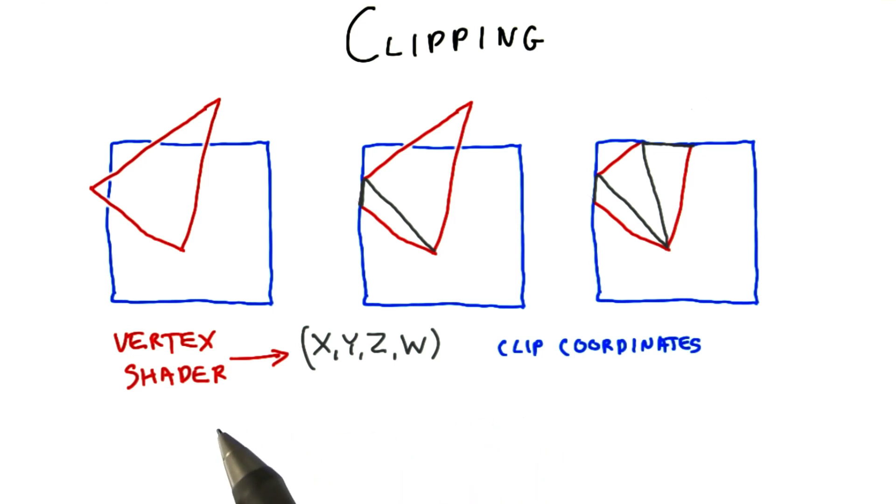The vertex shader can produce other intermediate results, such as computing location once the model and view matrices are applied. It is required that the vertex shader produce a position on the screen for the vertex. This position is a homogeneous coordinate. The rasterizer then takes this position and performs clipping.